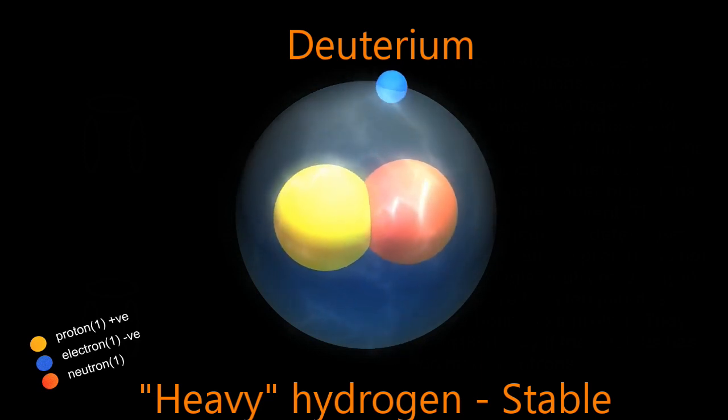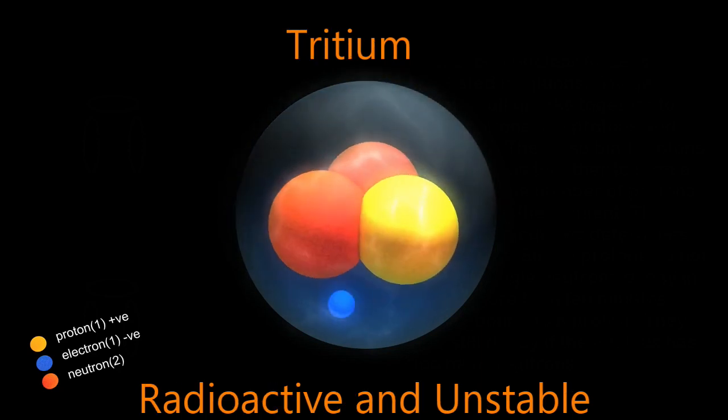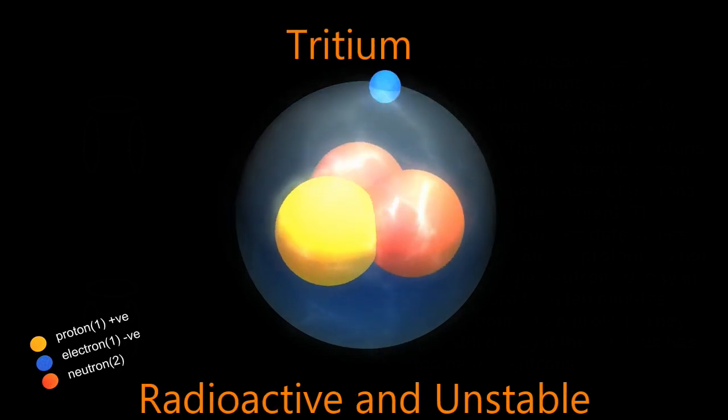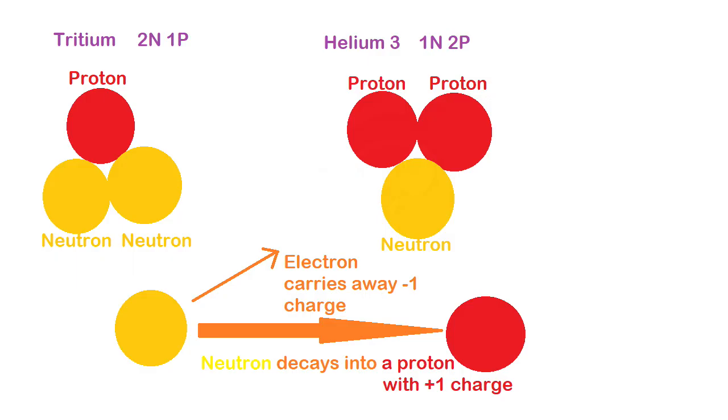A proton and a neutron in a nucleus make deuterium. Deuterium is a heavy form of hydrogen. Perhaps some nuclei had two neutrons and one proton, making tritium, the heaviest naturally occurring form of hydrogen. Tritium atoms are unstable with a half-life of only 12 and a half years and would have decayed into helium-3.